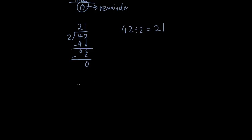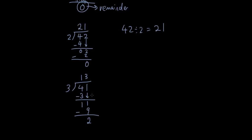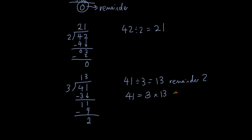Now what happens if we can't finish dividing evenly? Let's try 41 divided by 3. 3 times 1 is 3, and 4 minus 3 is 1. Bring down the 1: 3 times 3 is 9, and 11 minus 9 is 2. We have nothing left, so we can stop here and say 41 divided by 3 equals 13 remainder 2. Or you can write it as 41 equals 3 times 13 plus 2, because 3 times 13 is 39, plus 2 is 41.